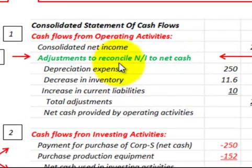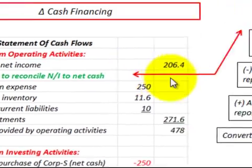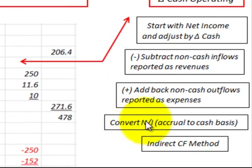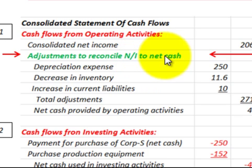For our adjustments to reconcile net income into net cash — converting from the accrual basis to the cash basis — this is what we'll really be looking at with the indirect method and how we can calculate it using a formula. We start with net income and adjust for any change in cash. Then we subtract out any non-cash inflows reported as revenues and add back any non-cash outflows reported as expenses.